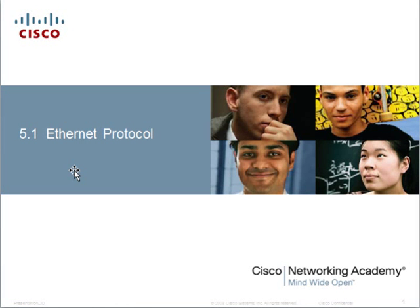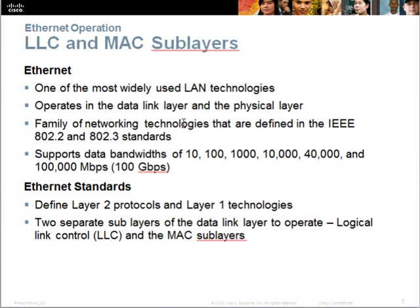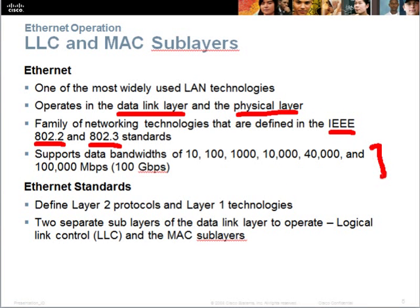The Ethernet protocol is one of the most widely used LAN technologies. It operates at the data link layer and the physical layer. The family of Ethernet technology is defined by the IEEE 802.2 and 802.3 standards, and it supports a variety of different network speeds. The Ethernet standards can be broken up into two separate layers: the logical link control layer (LLC) and also the MAC sub-layer.